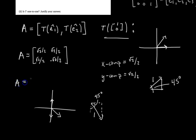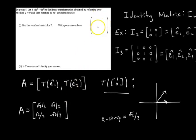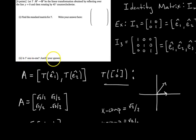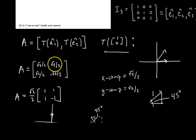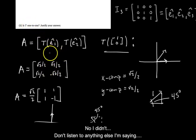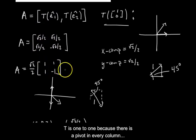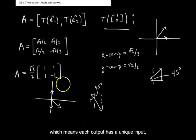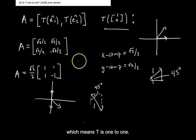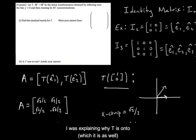You can factor out root 2 over 2 and write A equals root 2 over 2 times the matrix [1, 1; 1, -1]. For the second part, is the transformation one-to-one? That's a matter of checking whether there's a pivot in every column. Row reducing gives a pivot in each column, so yes, this transformation is one-to-one. You can also verify this geometrically — every vector in the output space can be reached by some input vector.